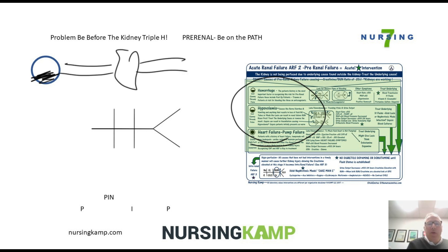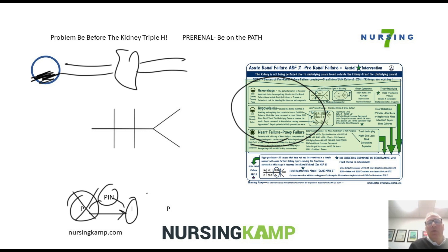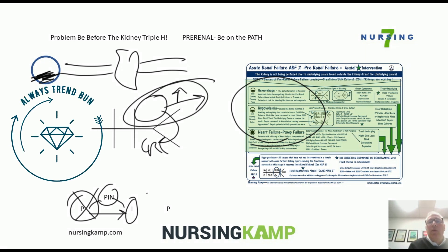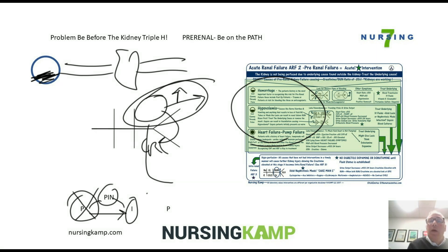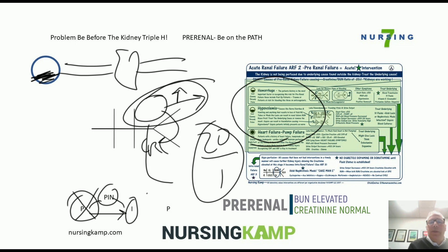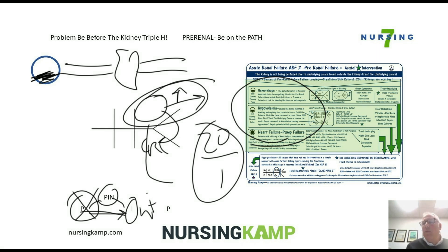A major issue is that all these pre-renal concerns can progress — what I call PIN — into intra-renal problems if not addressed quickly enough. We know it's pre-renal when BUN is elevated. If the creatinine is normal, then you have a potential dry state, a condition we call 20 to 1. If it isn't addressed, it could become an intra-renal problem, which is why recognizing and notifying the doctor early is so important.